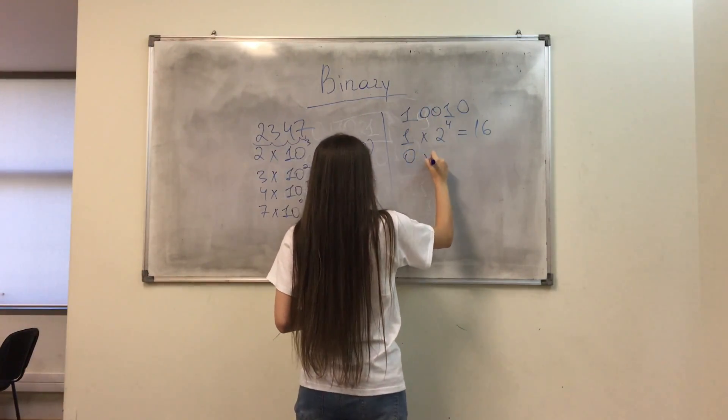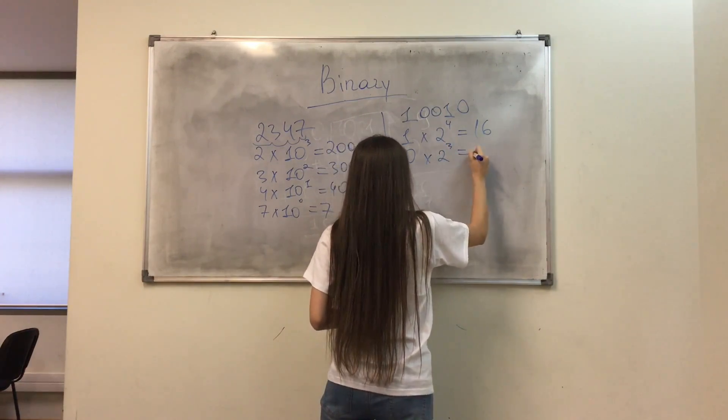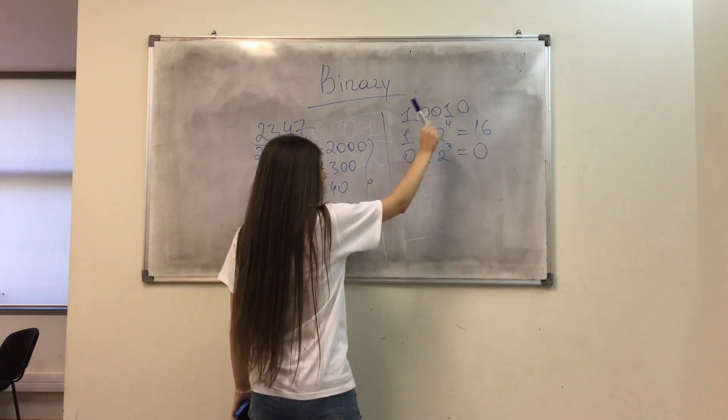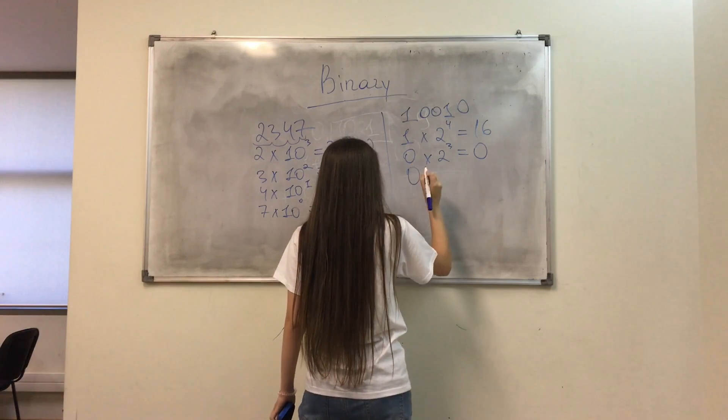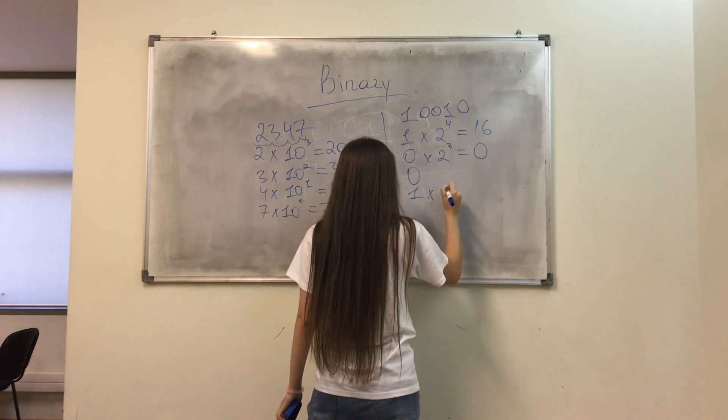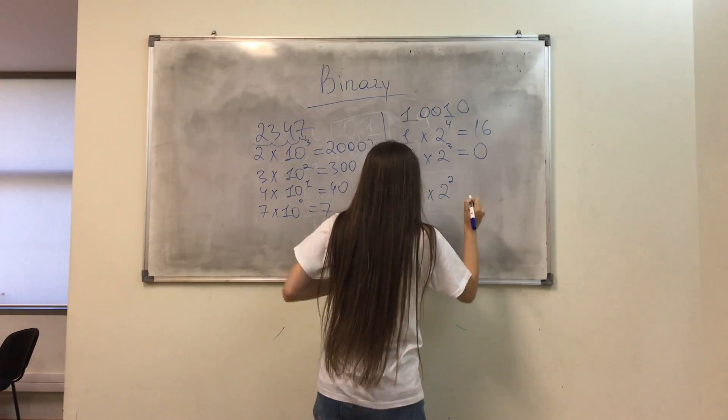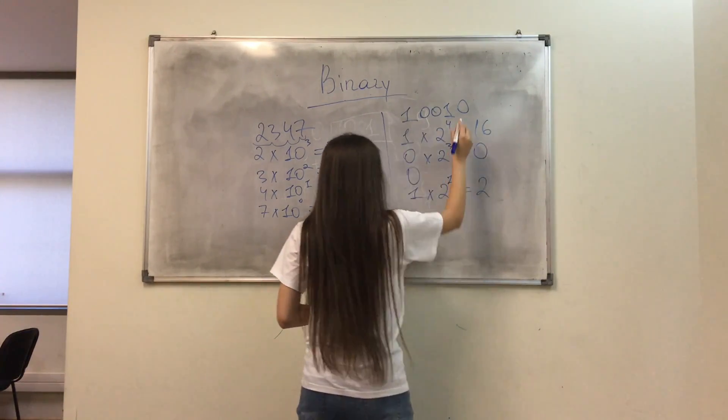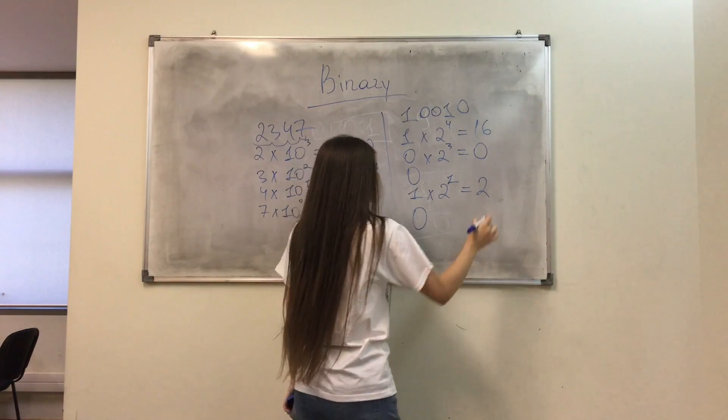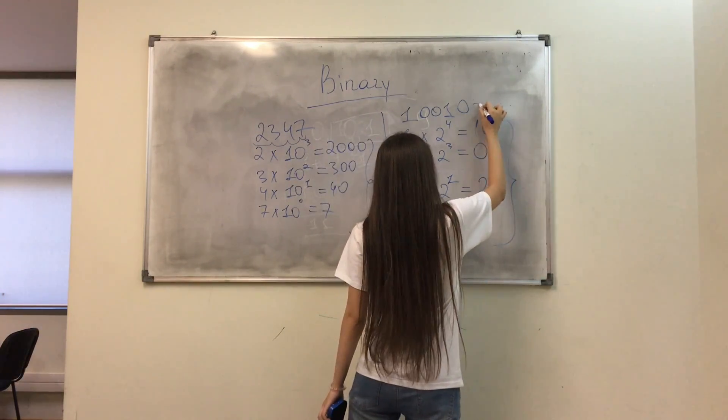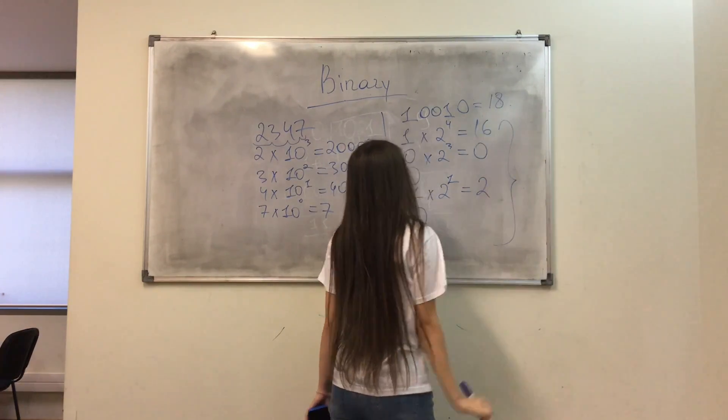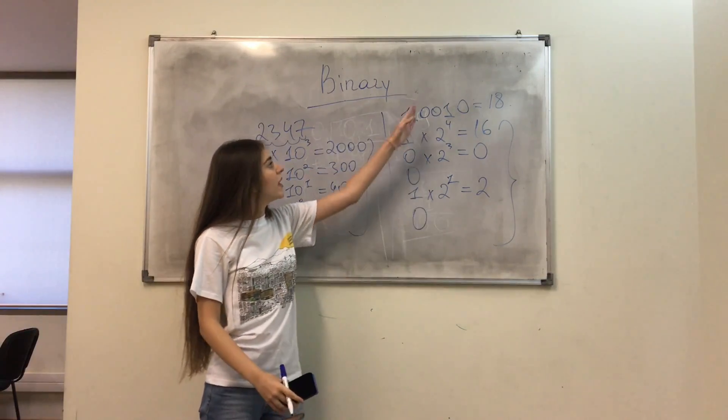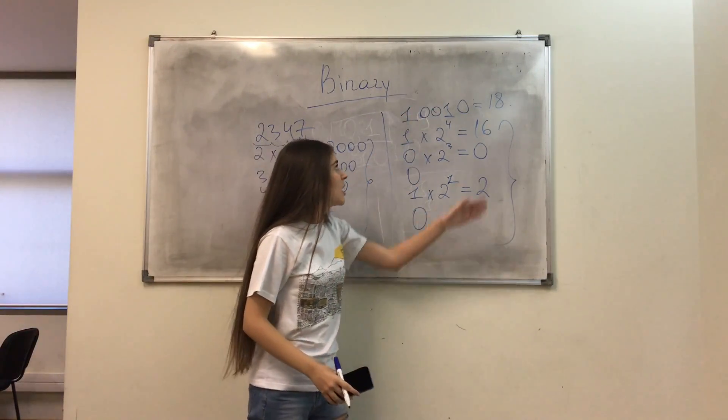The next one is 0 times 2 power of 3, which is 0. So the next one, we also get 0. 1 times 2 power of 1, we get 2. And the last one is 0. So adding all these numbers together, we get 18. And it means that our binary number represents the number 18.